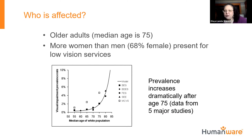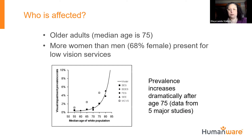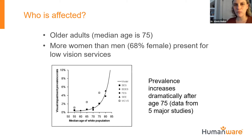A question from the chat: is there a higher percentage of glaucoma in men or women? For primary open-angle glaucoma, there isn't a huge predilection for male versus female — it depends on the type of glaucoma. It's more the racial distinction that affects prevalence.